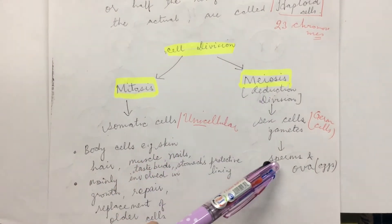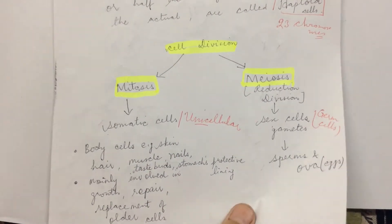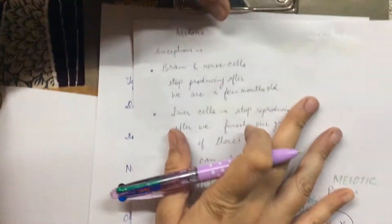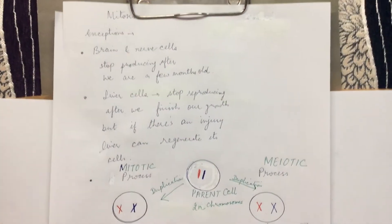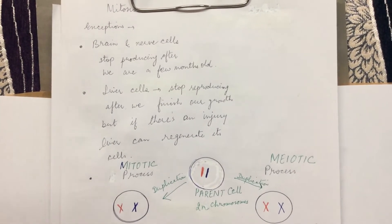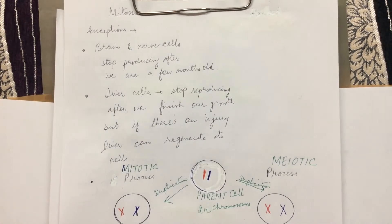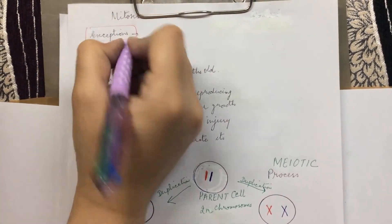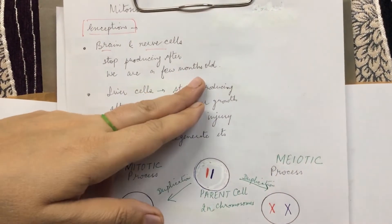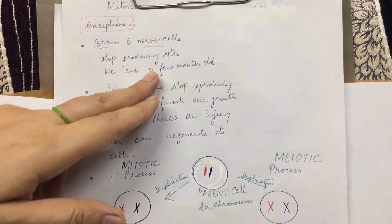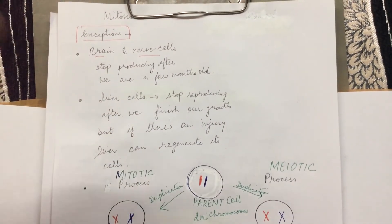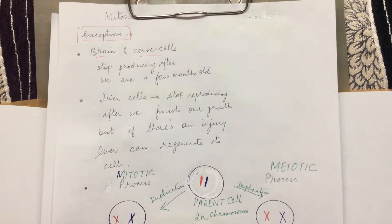Meiosis leads to the formation of sperms and ova. Mitosis happens in all body cells involved in growth and replacement of older cells, but exceptions are always there. In the case of brain and nerve cells, these cells stop producing after we are a few months old. The number of brain cells or nerve cells formed during that age will remain the same until our last breath.